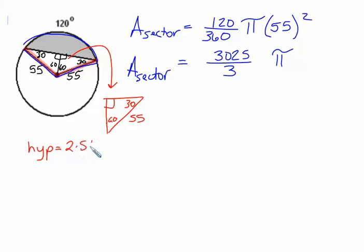We know that the hypotenuse is double the shorter leg. Here the hypotenuse is 55. We can put some variables in the picture. Doing this, the short leg is across from the 30, which is the y. So 55 is equal to 2y. When we divide both sides by 2,